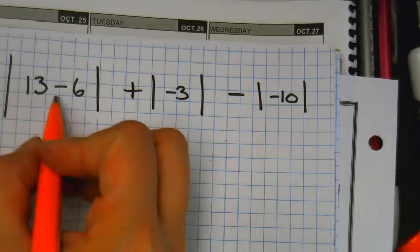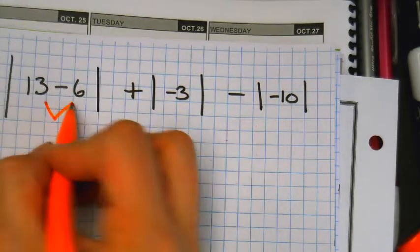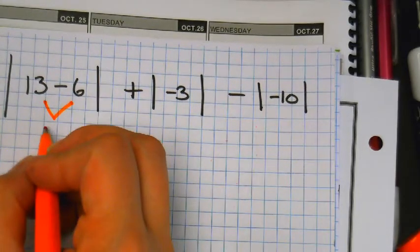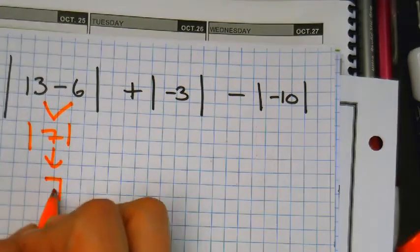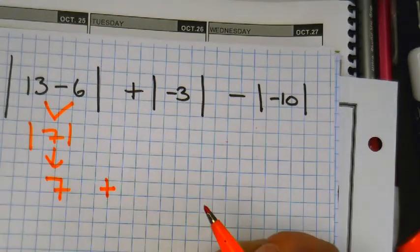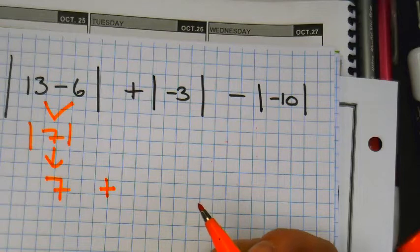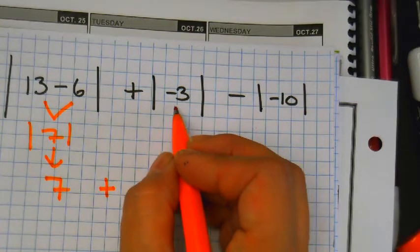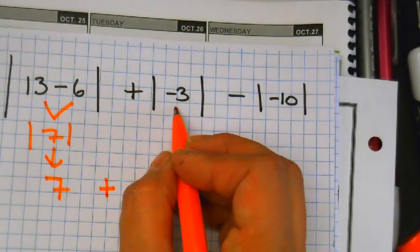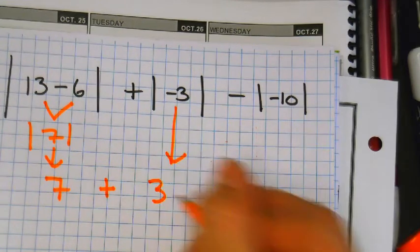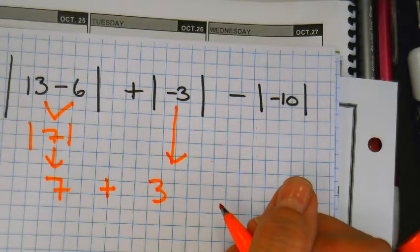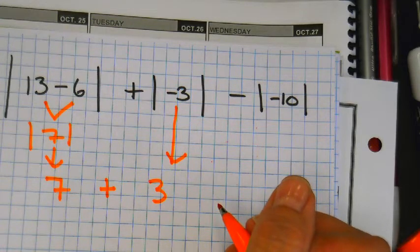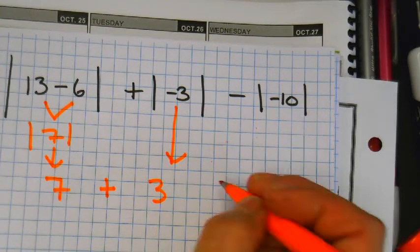What's 13 minus 6? 7. In the bars, take it out. What do you have? 7. Plus? Negative 3. What is the absolute value of negative 3? 3. Minus. Absolute value of negative 10 is? 10.